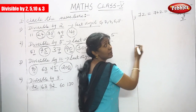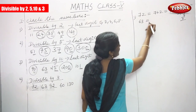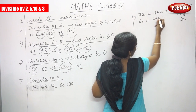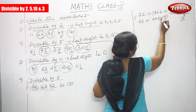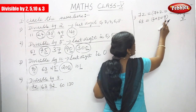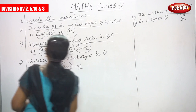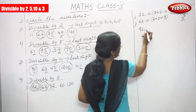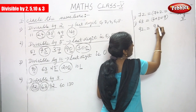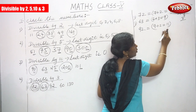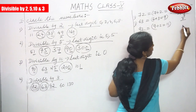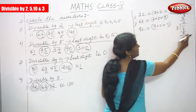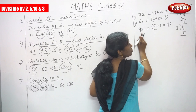Next number is 63. If the sum of the digit is divisible by 3, it is divisible by 3. 6 plus 3 equals 9, and 9 is divisible by 3, so 63 is also divisible by 3. Next is 92: 9 plus 2 equals 11. 11 is not divisible by 3 — 3 threes are 9, remainder is 2 — so 92 is not divisible by 3.